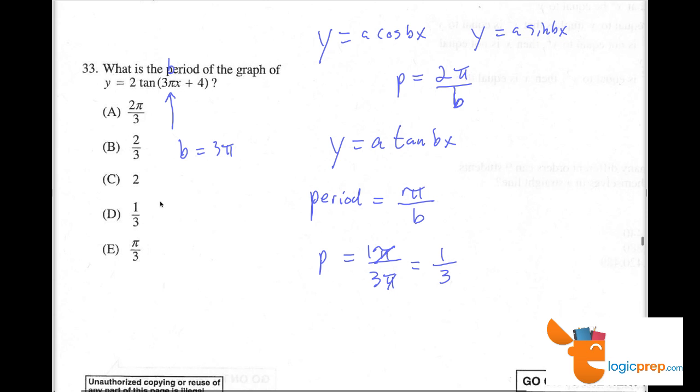So the period of this particular graph would be d, 1 third. Remember the period is always the same with cos and sine, because they're constant based off of 2 pi.